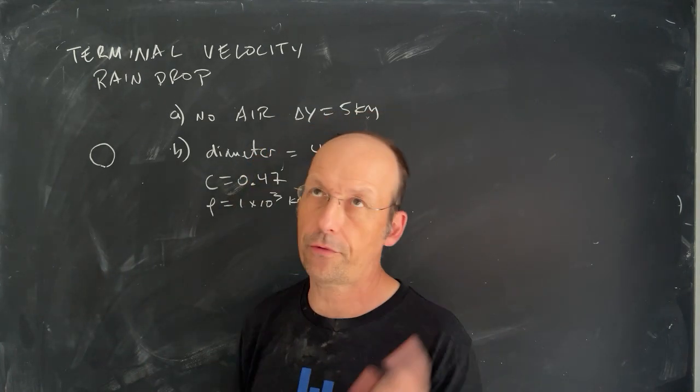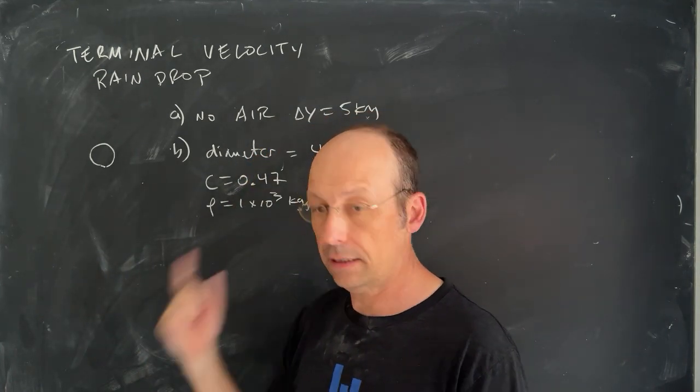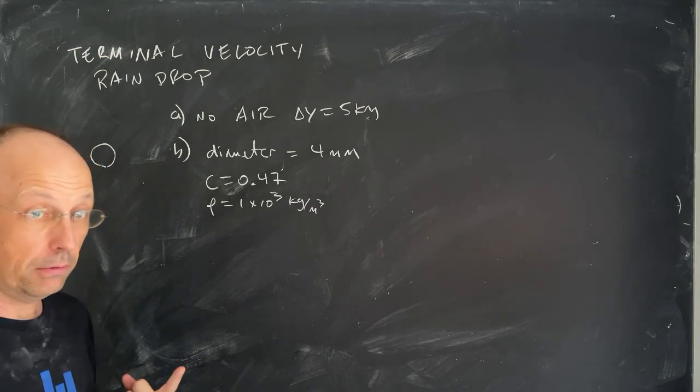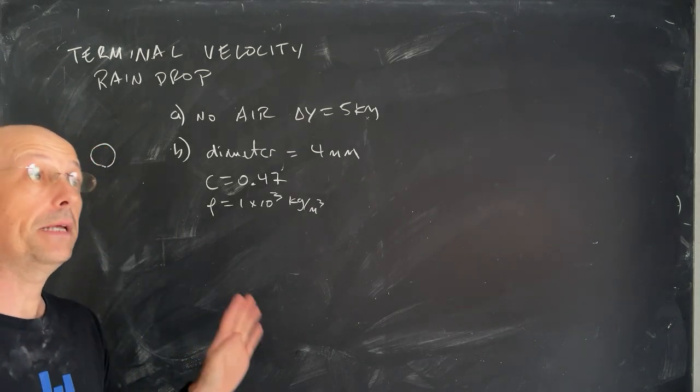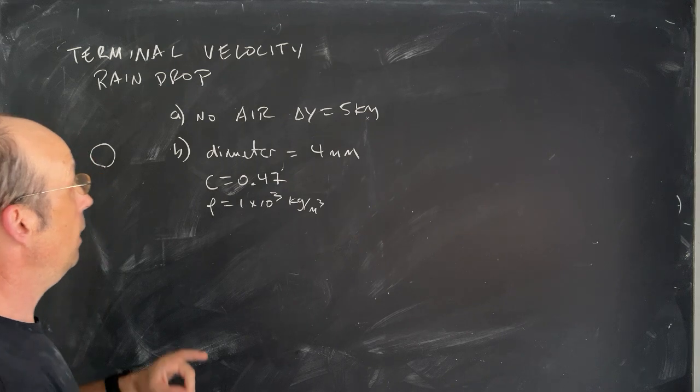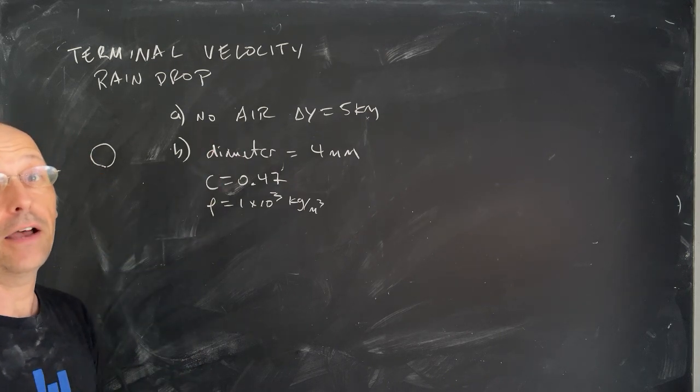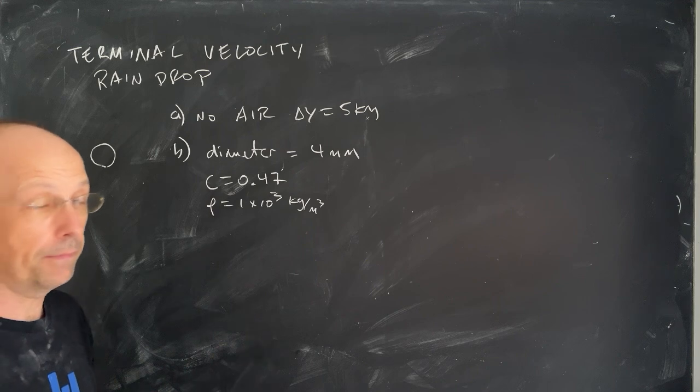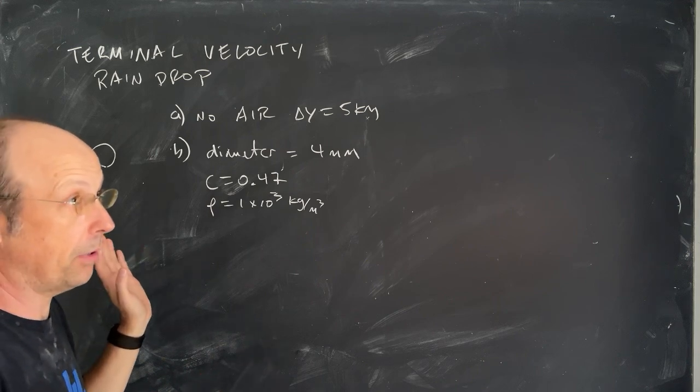Problem number 25, chapter 5 on the Serway book. Let's do it. So this one says, imagine that you have a raindrop and there is no air, which would be kind of weird, but let's just say it, and it drops from a height of 5 kilometers. How fast would it be going? So this doesn't have anything to do with drag.